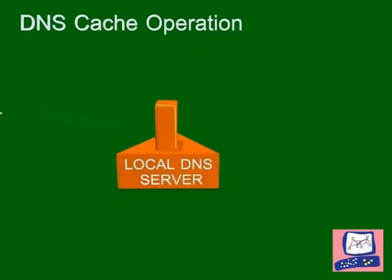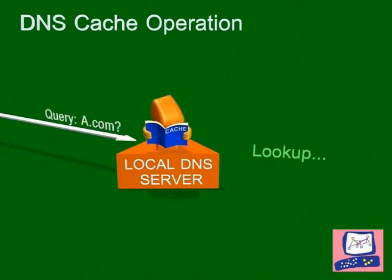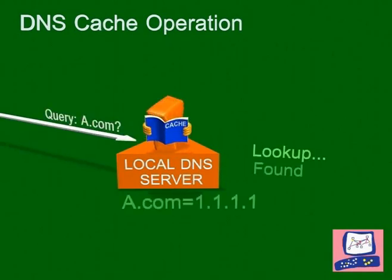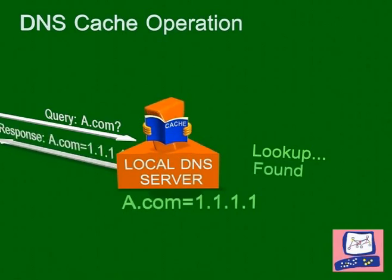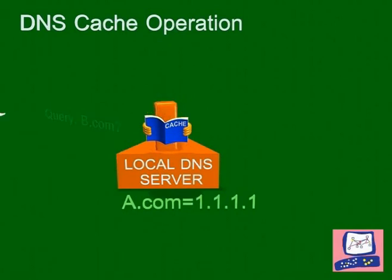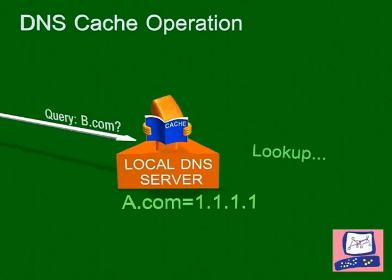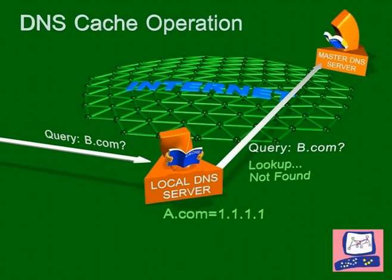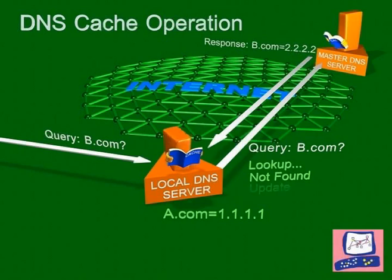Local DNS servers make this faster. They cache addresses so that requests don't go to the Internet every time. If the request is not in the cache, the local DNS server forwards the request to the Internet's DNS.